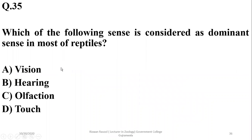Question thirty-four: which sense is considered the dominant sense in most reptiles? The dominant sense used for predation and other activities is vision. The correct option is alpha.